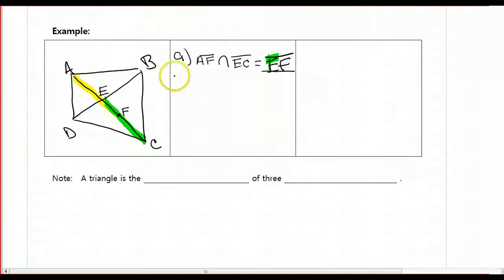Let's try another, example B. Let's find the union of segment AF and EC. Same two segments, now we're just going to put them together. If I take AF, the yellow highlighted segment, and EC, the green highlighted segment, and I put them together, I get a longer segment that goes all the way from A to C. So I get segment AC.